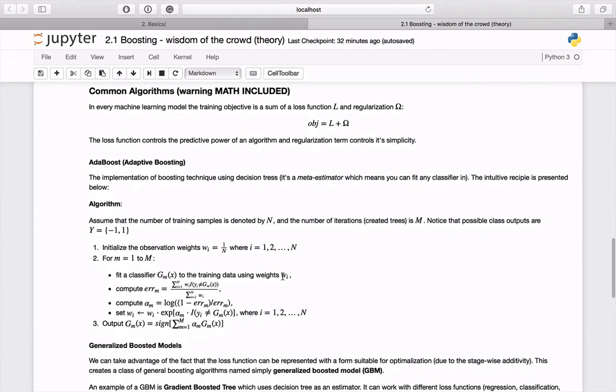Okay, let's proceed to some common algorithms. Every machine learning training objective consists of two parts: a loss function and a regularization. The loss function controls the predictive power of an algorithm and regularization controls its simplicity. A very common implementation of boosting is called AdaBoost, it's a shortcut from adaptive boosting.